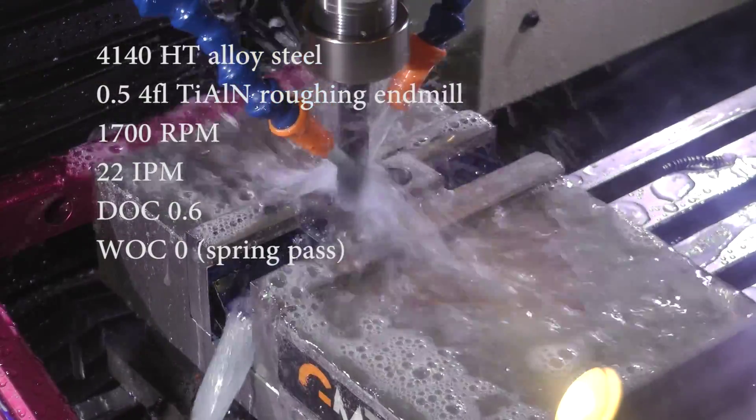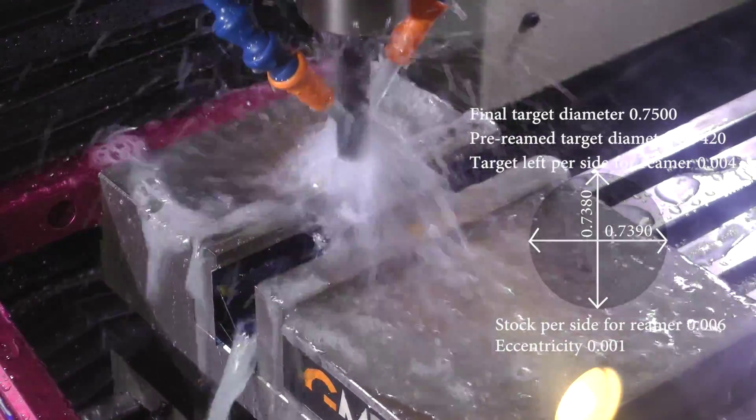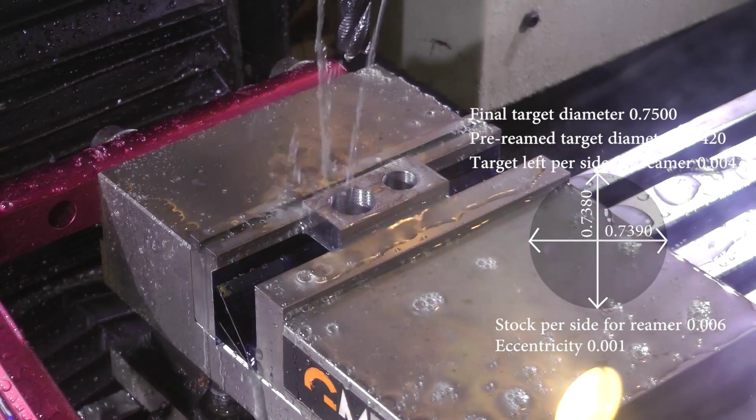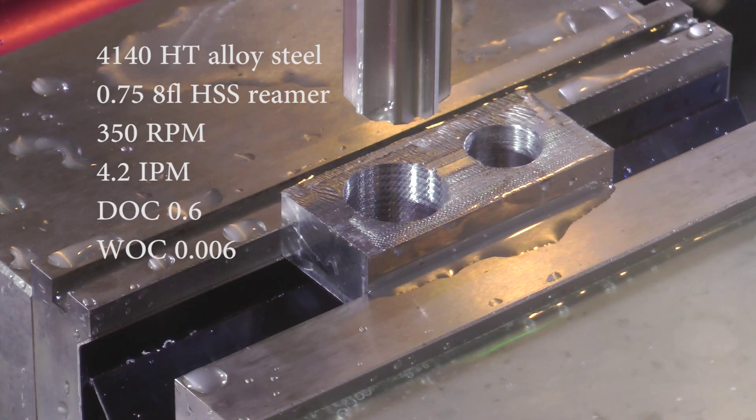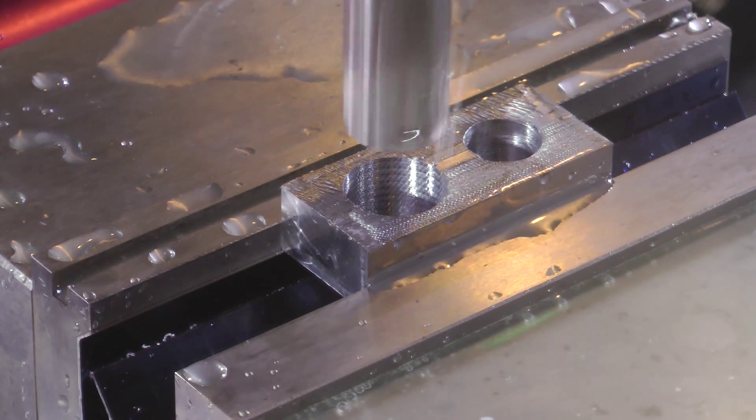So I come in with another spring pass, and that widened a little bit, took another 2,000ths off per side to 6,000ths. My target was 4,000ths, but I decided I'd just go ahead and go with it. Carl at Lakeshore Carbide suggested 4 to 5,000ths for this size reamer is ideal.